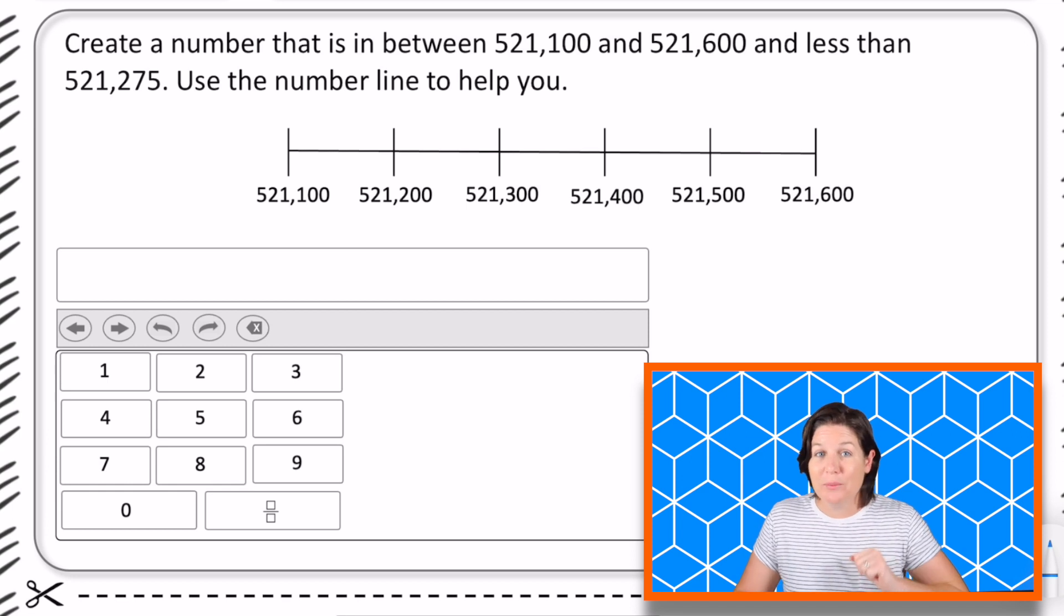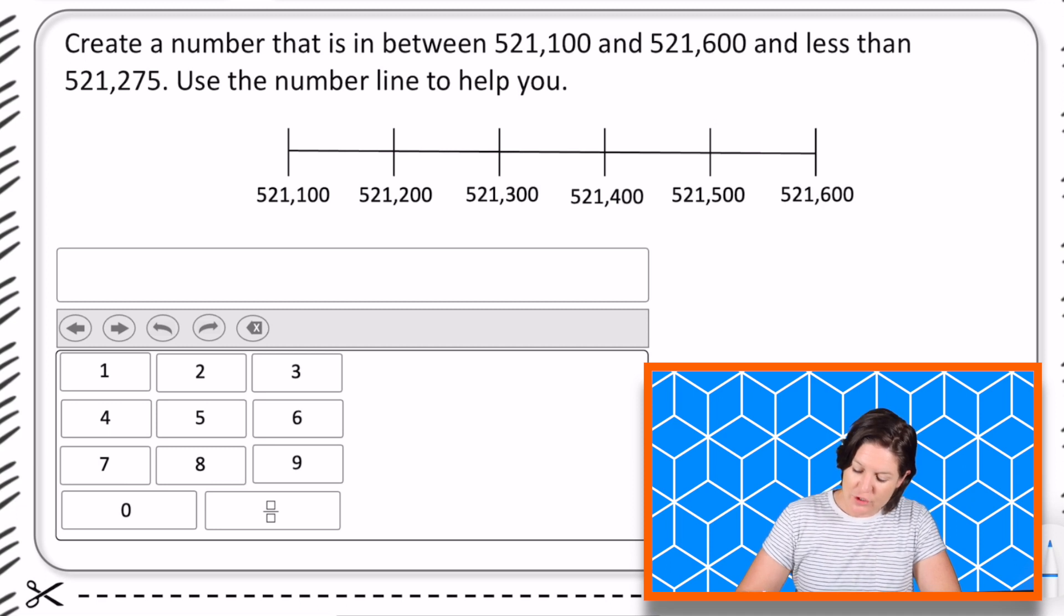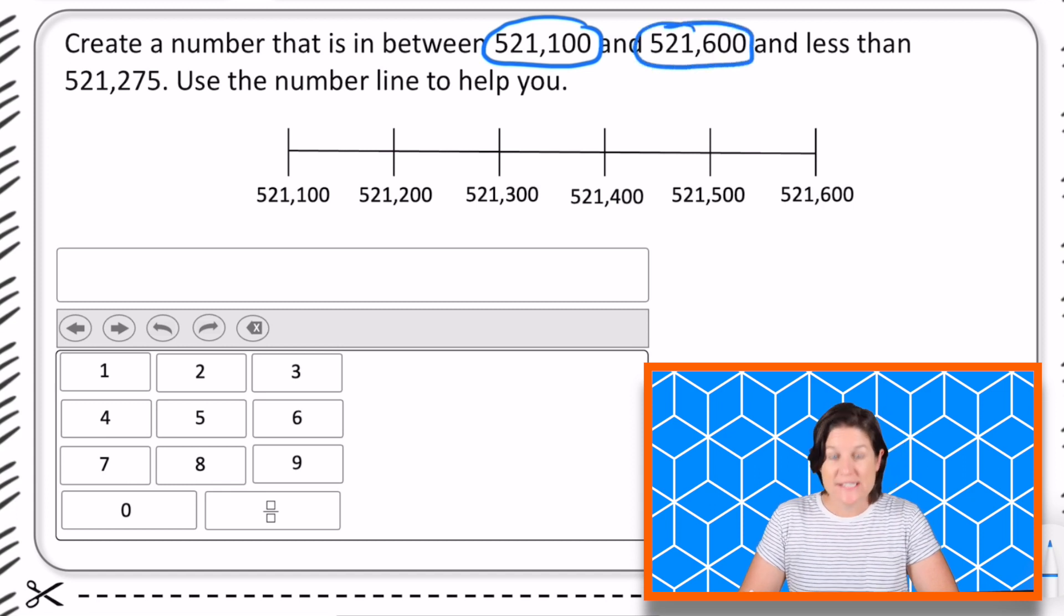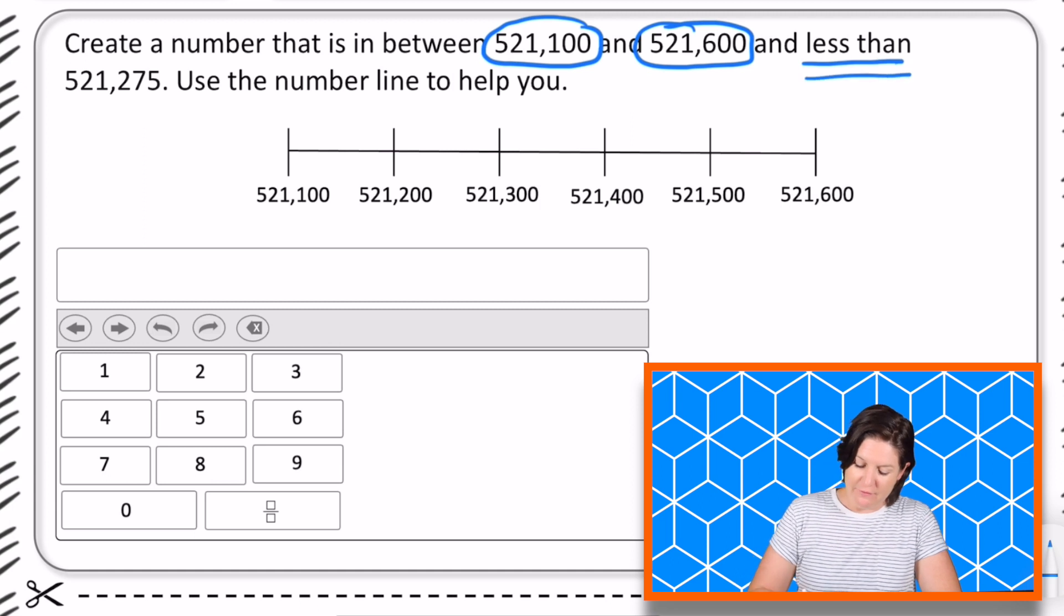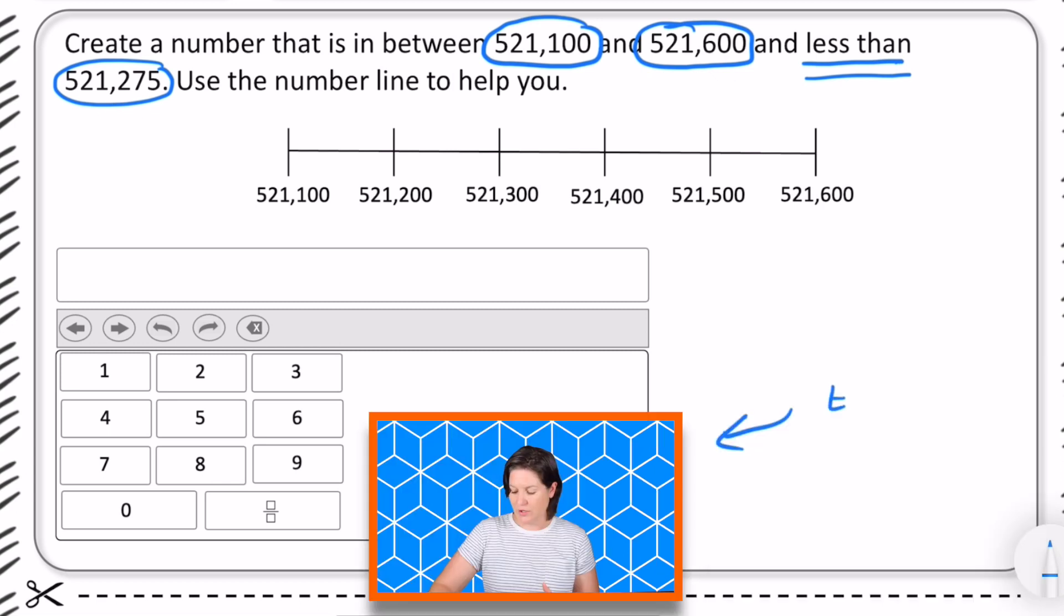All right fourth grade, here is your problem of the week. It says create a number that is in between 521,100 and 521,600 and less than 521,275. Use the number line to help you. And this right here is our equation editor.